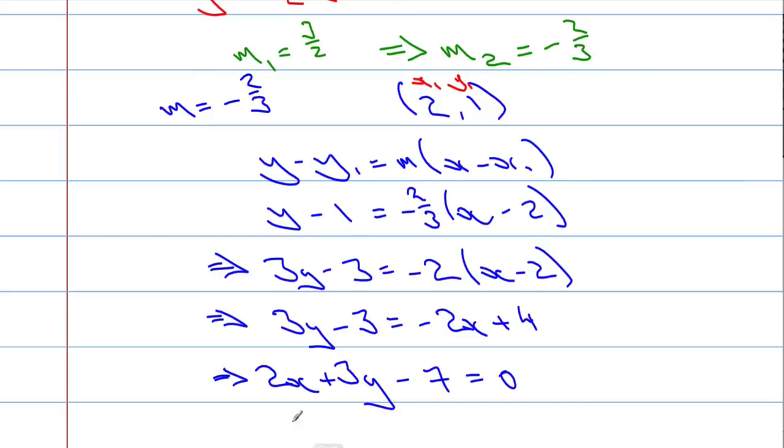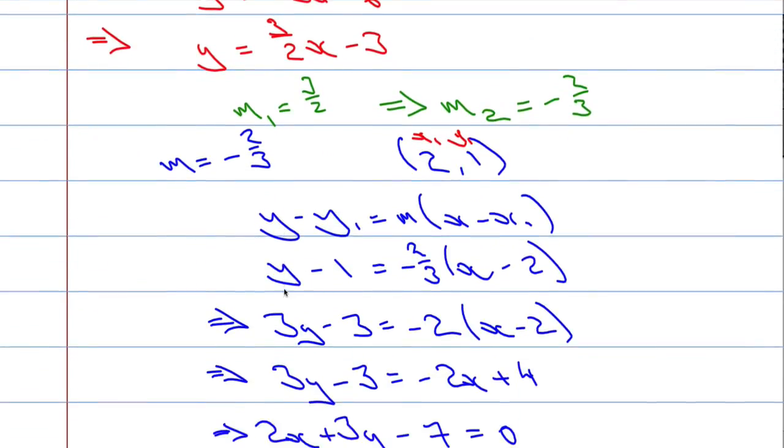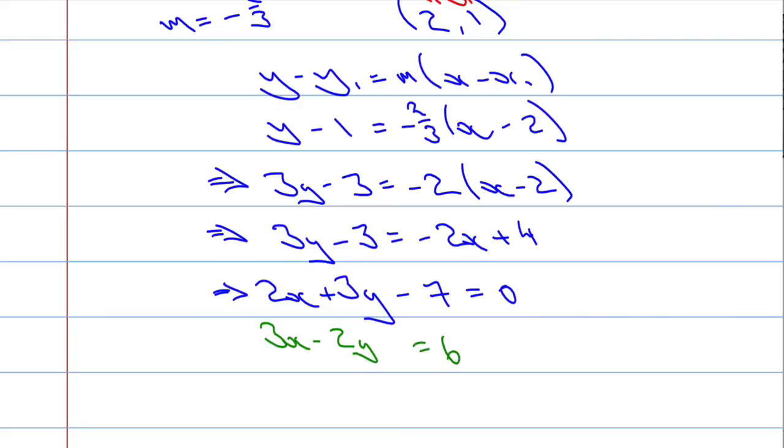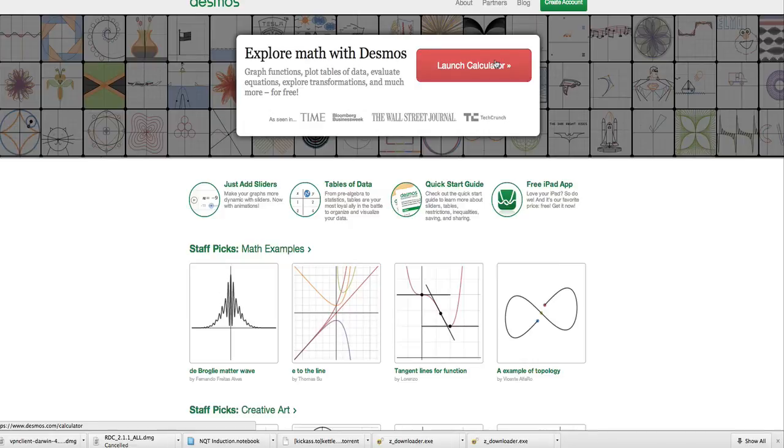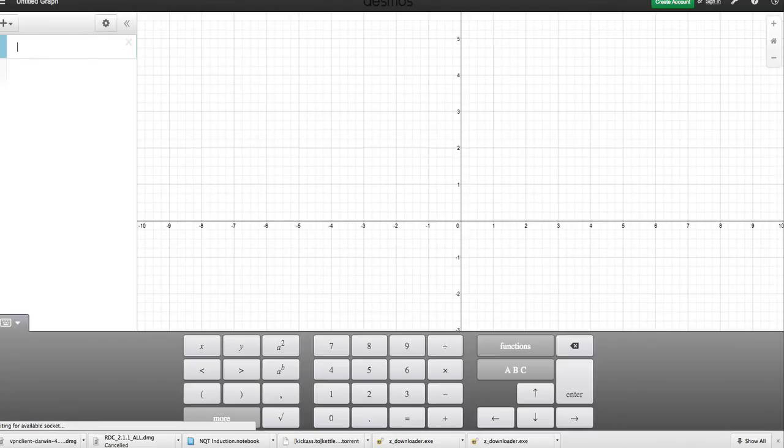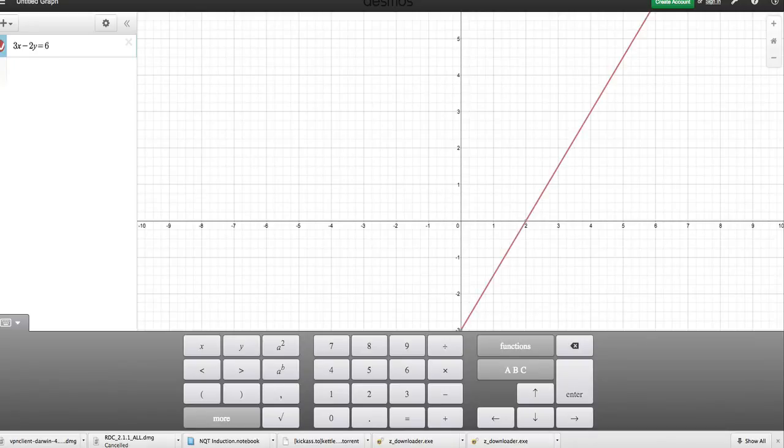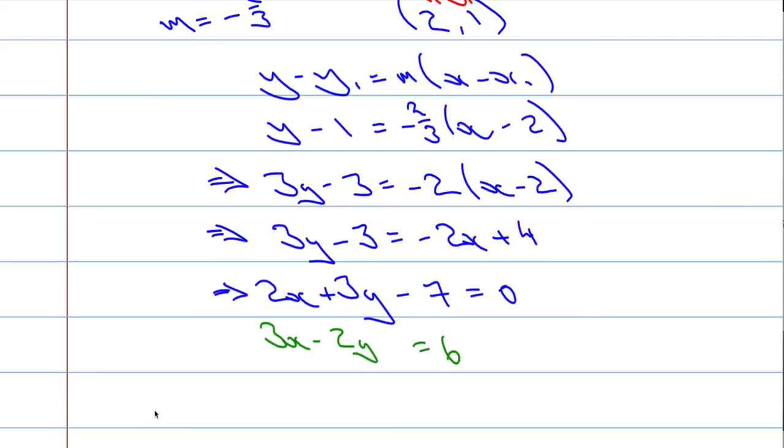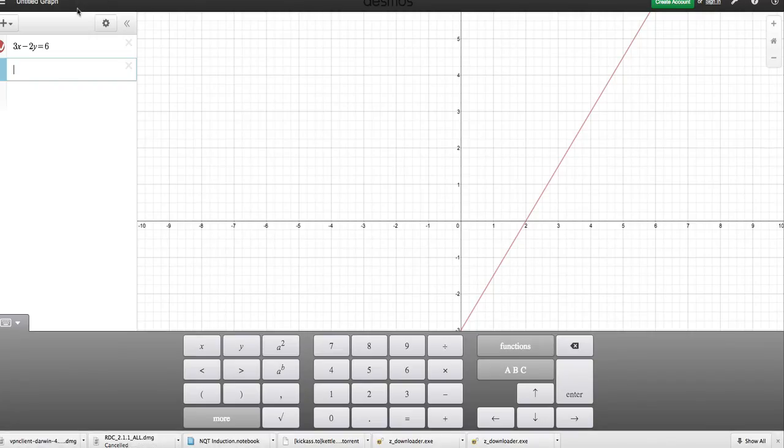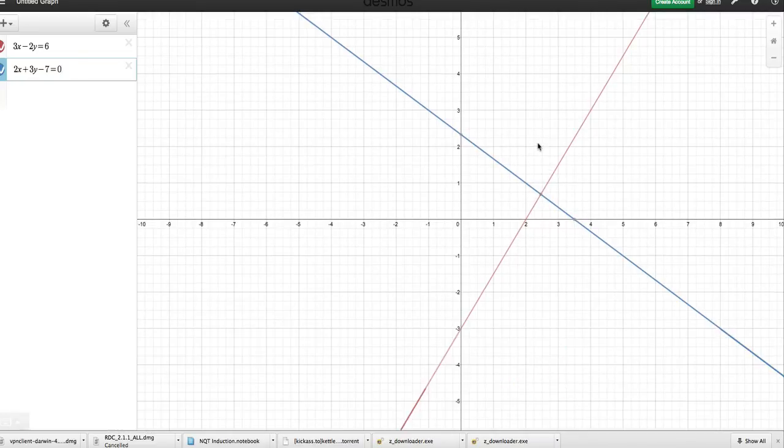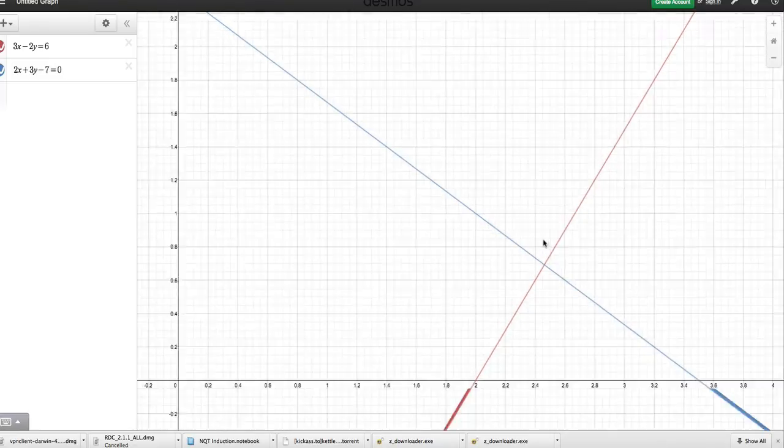And let's just bring up Desmos here, have a quick look. So we've gone to desmos.com. And we had 3x minus 2y equals 6 was one of the lines. And then the other line, 2x plus 3y minus 7 equals 0. And look at this. Let's just zoom in on what's going on there. That is looking fantastic. And you can see, you can clearly see these two lines here. They look perpendicular, that's for sure.